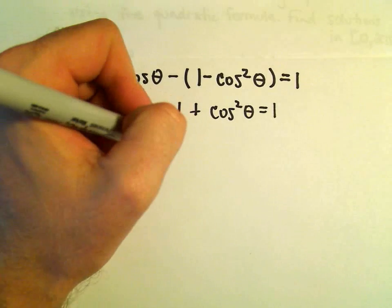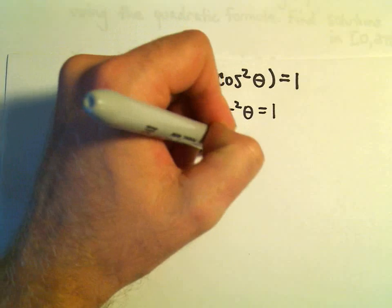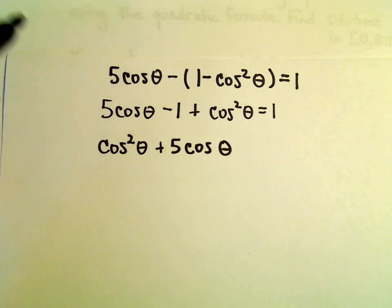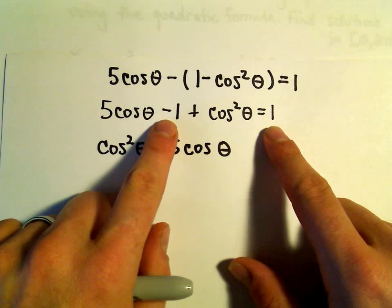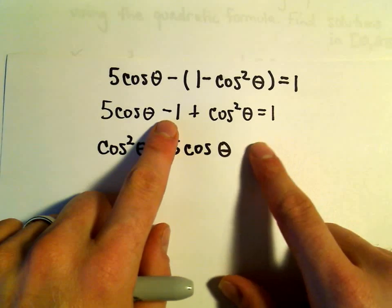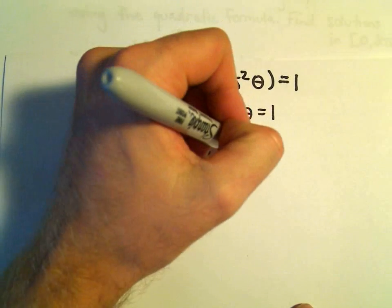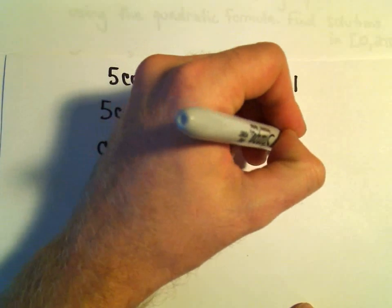We've got a positive 5 cosine theta, so I'm going to write that next. We've got negative 1 on the left and a positive 1 on the right. If we subtract the 1, we'll actually have negative 2 equals 0.